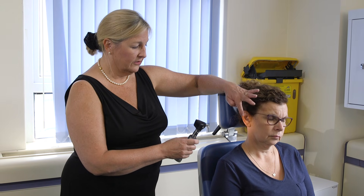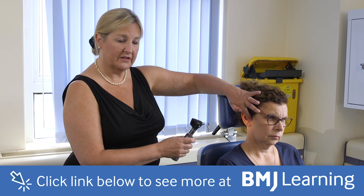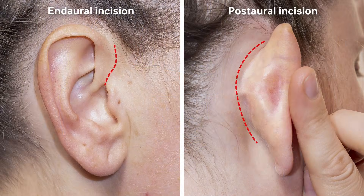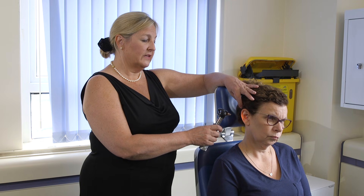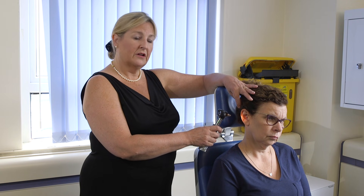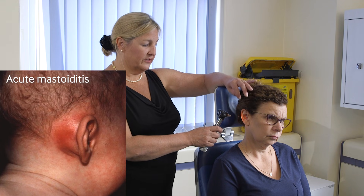When you're examining the external ear you look, particularly in children, for the presence of maybe a pit or sinus — a so-called preauricular sinus — or you may see evidence of previous surgery with an endaural scar or behind the ear a so-called post-aural incision. Behind the ear you're also examining for the presence of the post-aural sulcus, which can be obliterated in acute mastoiditis.